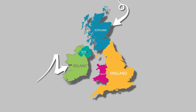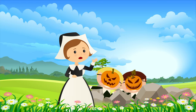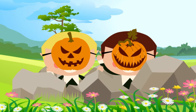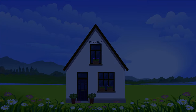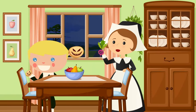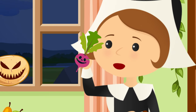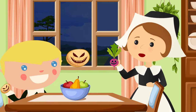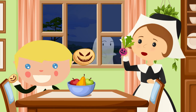Sound familiar? In Ireland and Scotland, kids would carve creepy faces into vegetable lanterns and hide in the woods, scaring unsuspecting strangers. Over time, families started making their own Jack's lanterns out of turnips, potatoes, or beets, and put them in their windows to scare away evil Jack and other evil spirits.